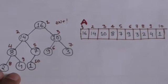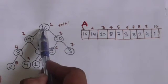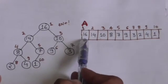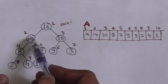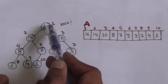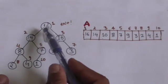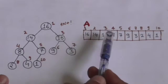Now see this max heap. It will be stored in memory as array A. The root of this max heap will be stored at index 1 in array A. The left child of the root will be stored at index 2×1 = 2 in the array. The right child will be stored at index 2×1+1 = 3 in the array. So element 10 is stored at index 3.